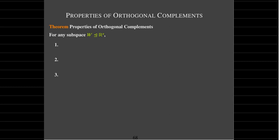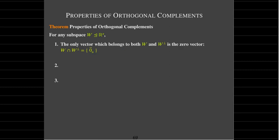What are the properties of orthogonal complements? First, the only vector which belongs to both W and W-perp is the zero vector. Going back to our picture of a plane and normal line, the only point those two objects have in common is the origin. The zero vector is perpendicular to any vector, so it belongs to both W and W-perp. And since both are subspaces, both must contain the zero vector.